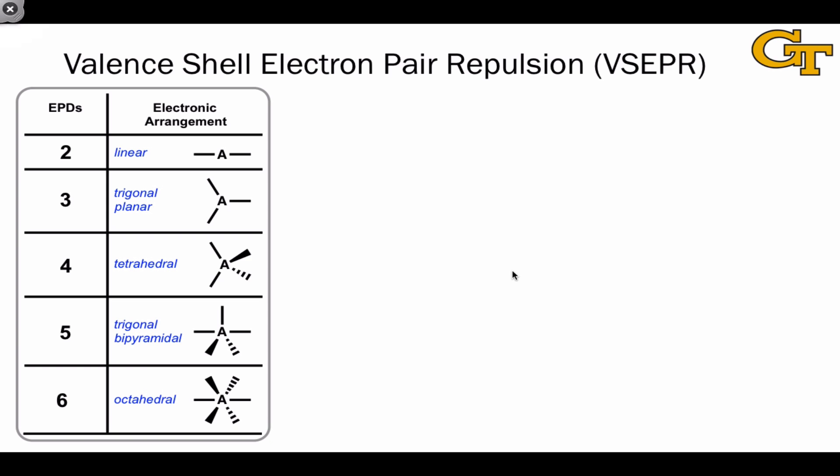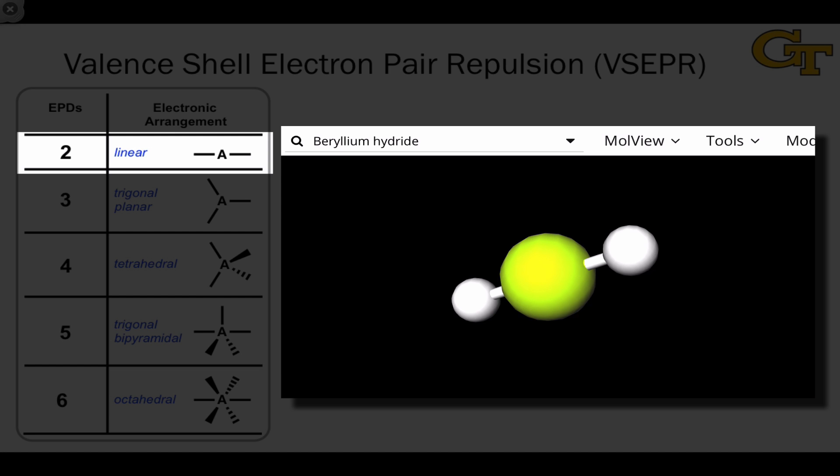From this idea that the number of electron pair domains determines the geometry, we can list the electronic arrangements corresponding to each number of electron pair domains, from two to six. I want to go through a few examples of molecules that exemplify these arrangements. The first is beryllium hydride, or BeH2.